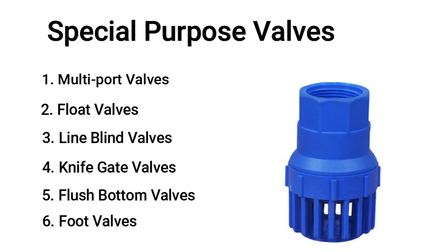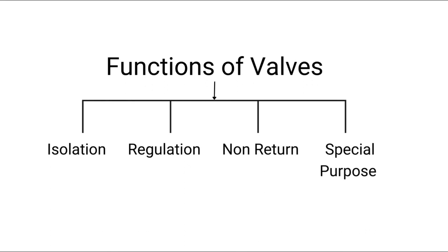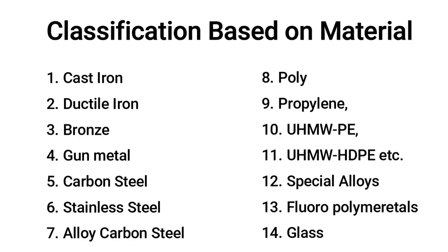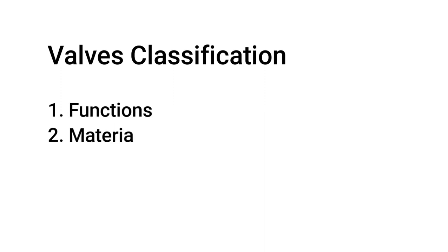The last special purpose valve is the foot valve, found at the end of a pipeline in a suction lift application. This completes the classification of valves based on their function. There are many materials available for valves, and classification can be done accordingly. The last classification is based on how valves are connected to the pipe, that is, based on end connection. The types of end connections can be visualized in the images shown. This way we have completed the classification of valves.